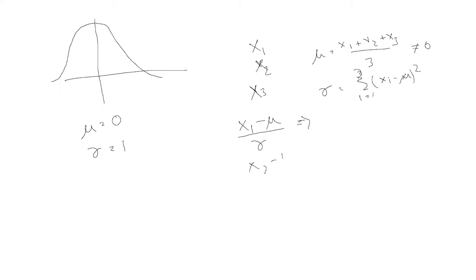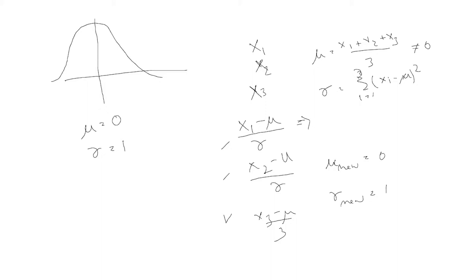So if you use (x1 - mu) / sigma, (x2 - mu) / sigma, and (x3 - mu) / sigma, then the new mean of these three points equals zero and the new standard deviation equals one. You can verify this yourself by calculating the new mean and new standard deviation — the new mean comes out to be zero and the new standard deviation comes out to be one.